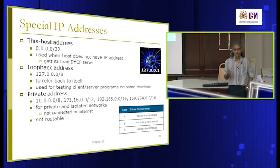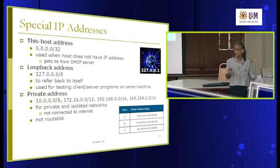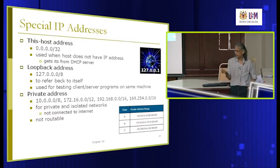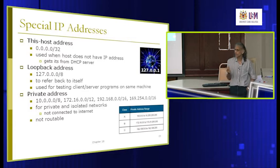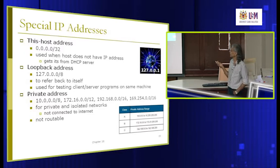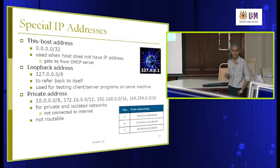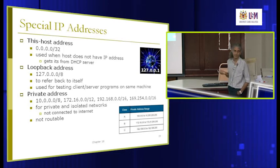This is a special address called the host address — used when the machine has not been allocated any IP address yet. The IP address can be configured manually or obtained from a server. When requesting from a server, you send a packet with source 0.0.0.0, and the server knows someone is requesting an IP address and will assign one. All zeros is a special address.